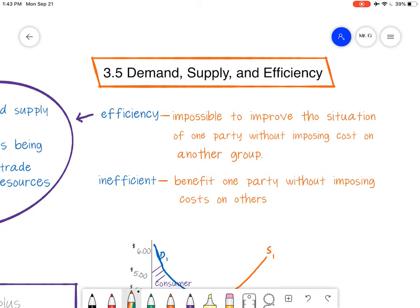If we're inefficient, we can benefit one party without imposing costs on another. Basically, we're not using all our resources efficiently, so we're able to use more of those resources, produce more, but we're not taking away from other people.